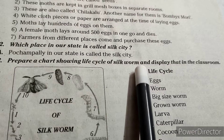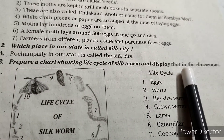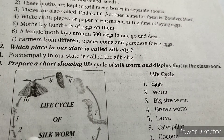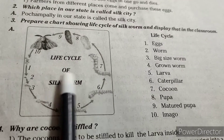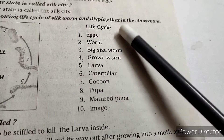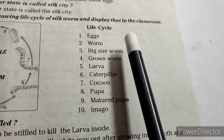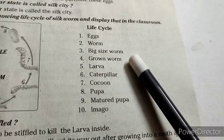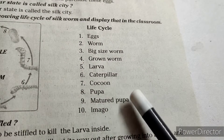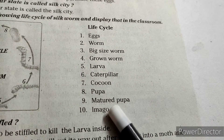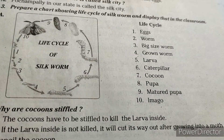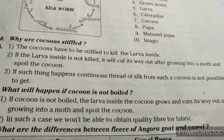Third question: prepare a chart showing the life cycle of silkworm and display it in the classroom. The life cycle goes: eggs → small worm → big worm → grown-up worm (larva/caterpillar) → cocoon → pupa → mature pupa → imago. Draw and display this in the classroom.